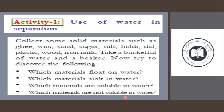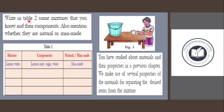Write in Table 2 some mixtures that you know and their components. Also mention whether they are natural or man-made. First example: lemon water — components are lemon juice, sugar, and water. This is man-made.